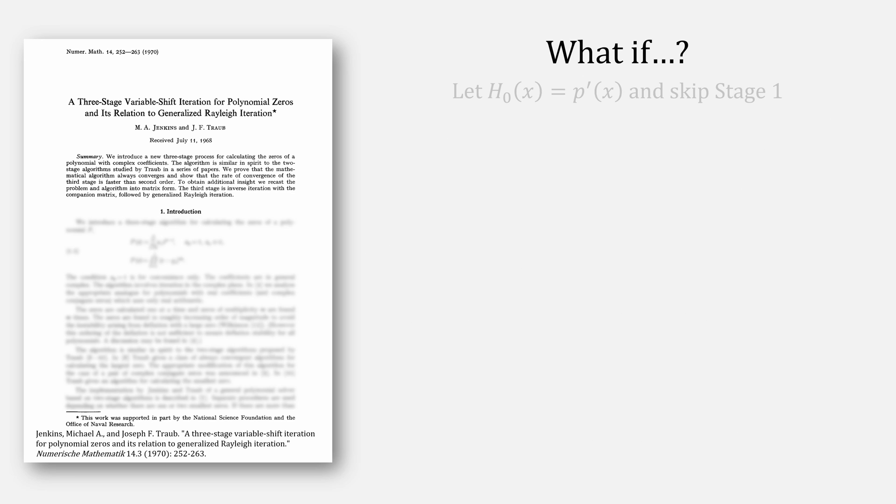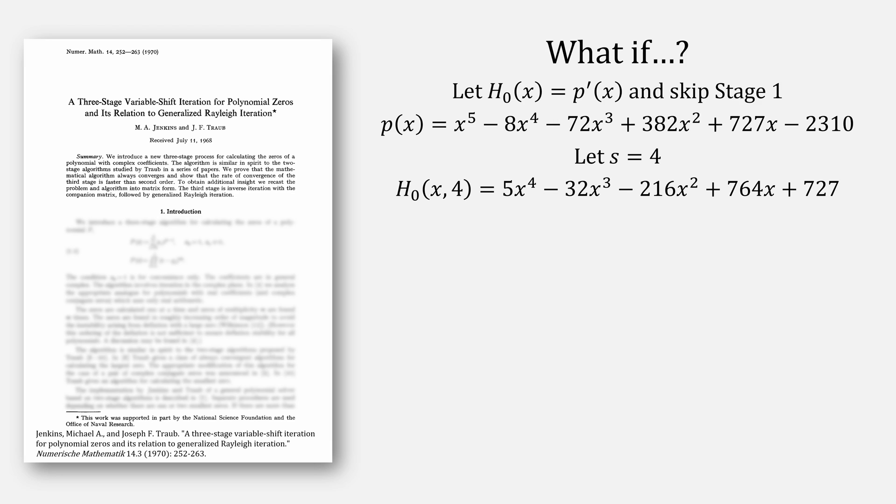What if we let h sub zero just be the derivative and then skip stage one, only applying now stage two, and I'm just going to use this example polynomial from earlier videos, letting our starting guess be the value of four. h zero will just be derivative and then plug everything into our shifted h equation to find our value for h1.